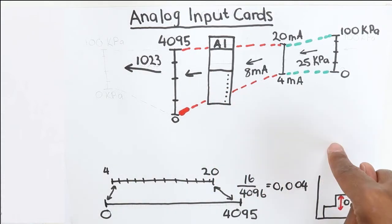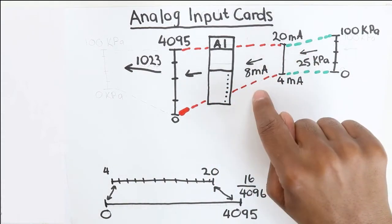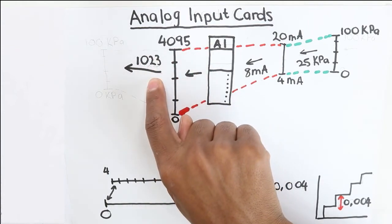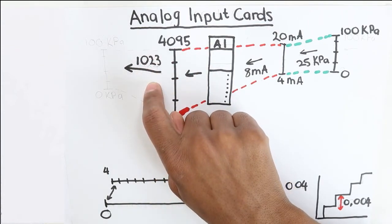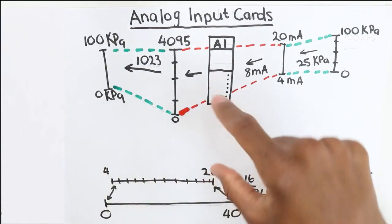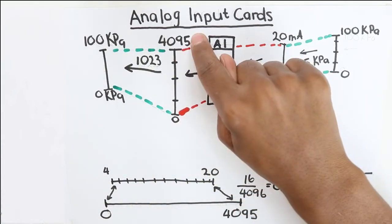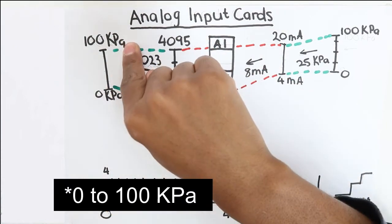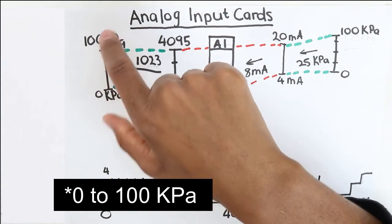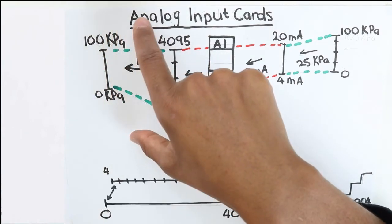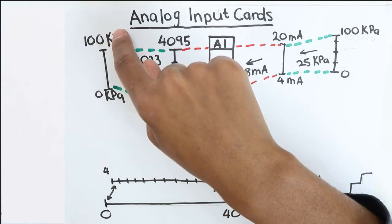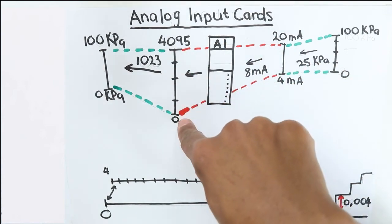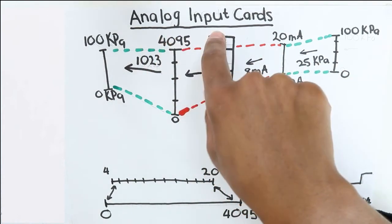So in our example, the pressure was 25 kPa, we got a milliamp signal of 8, and then the value that we expect to see in our register is 1023. Now at this point, you can then map this 0 to 4095 range to the 0 to 100 kPa. And then you can now be able to use it in a program, because if you're programming something and you're using values like 0 to 100 kPa, it is very easy rather than using milliamp signals or this 0 to 4095.